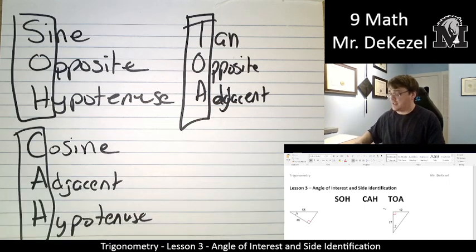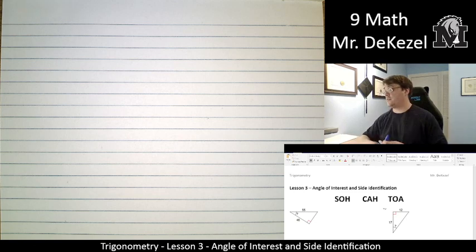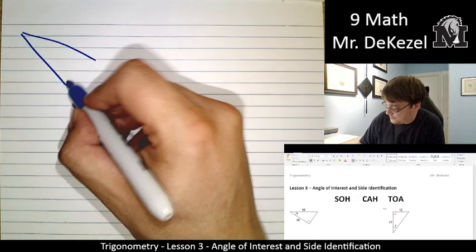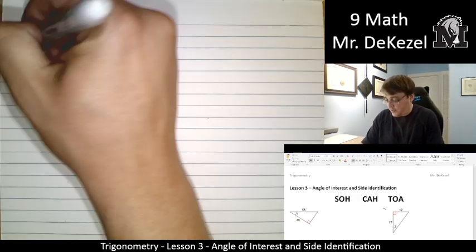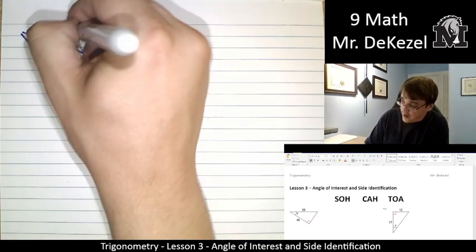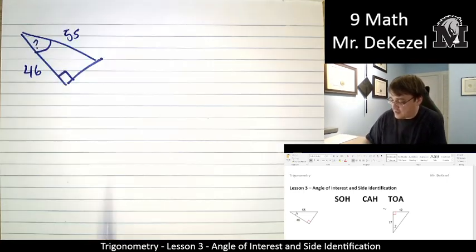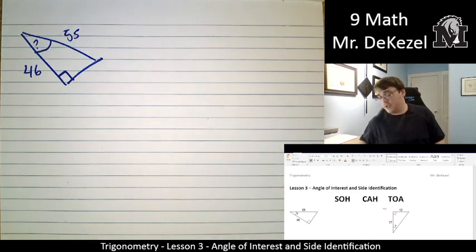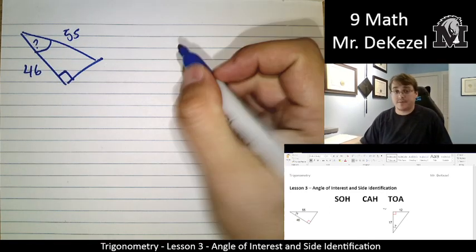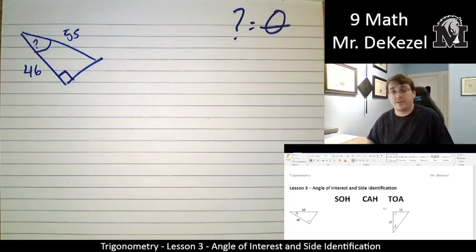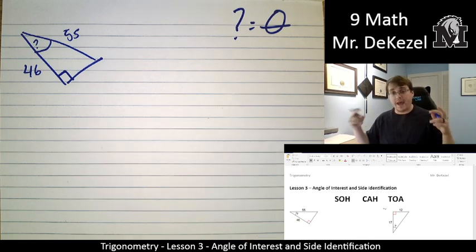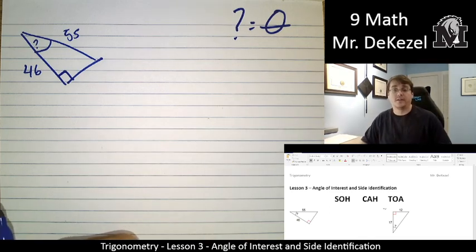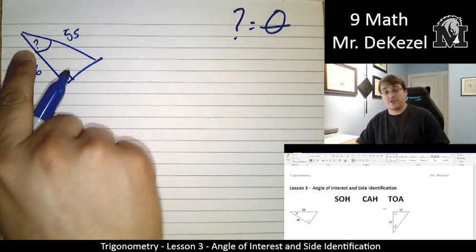So let's go with an example and hopefully it will make a lot of sense. We have our triangle. This is the right angle. We are given an angle marking with a question mark. And we have 55 and 46. Essentially, we are going to be using our question mark or sometimes the question mark will be a theta in other questions. We're going to be using that as our angle of interest. So our angle of interest is here.